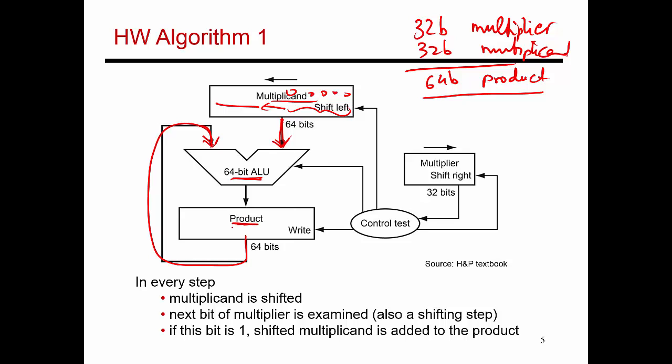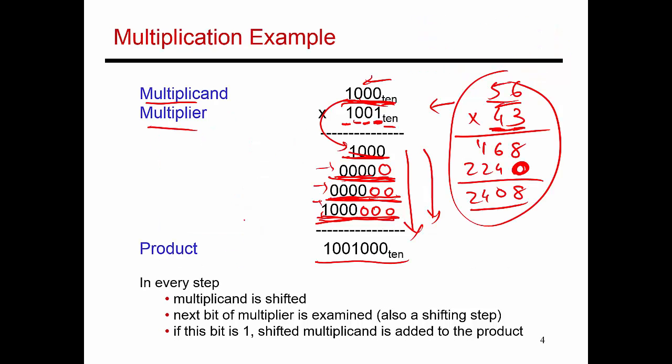Once I've taken this product or this sum from the previous step and I've added it to the multiplicand shifted to the left, that result, should I be using it to update this register or not? That's the question before me. And so in some cases, I do want to take the multiplicand shifted to the left, but in some cases, I just want to add a zero. That is, I want to leave the sum as it was.